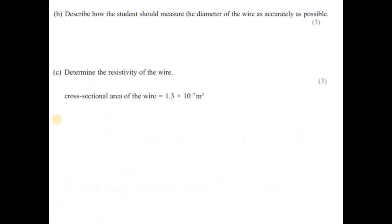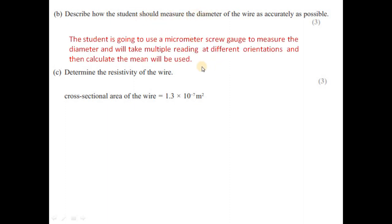Describe how a student should measure the diameter of the wire as accurately as possible. The student is going to use a micrometer screw gauge to measure the diameter. They will measure the diameter at different places and in different orientations, take multiple readings, and use the mean in order to get reliable results.